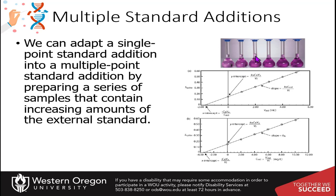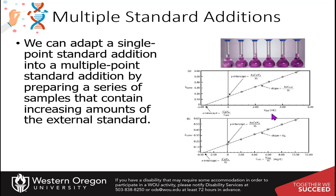You then dilute up to the mark in the volumetrics, mix it really well, and you'll see an increase in signal throughout the samples. The sample containing no standard — just your sample alone — still has a reading because your sample is still in there giving a signal. That's the unspiked sample with no spike added. As you add the spike, the signal goes up for each increasing amount of standard added to your sample.